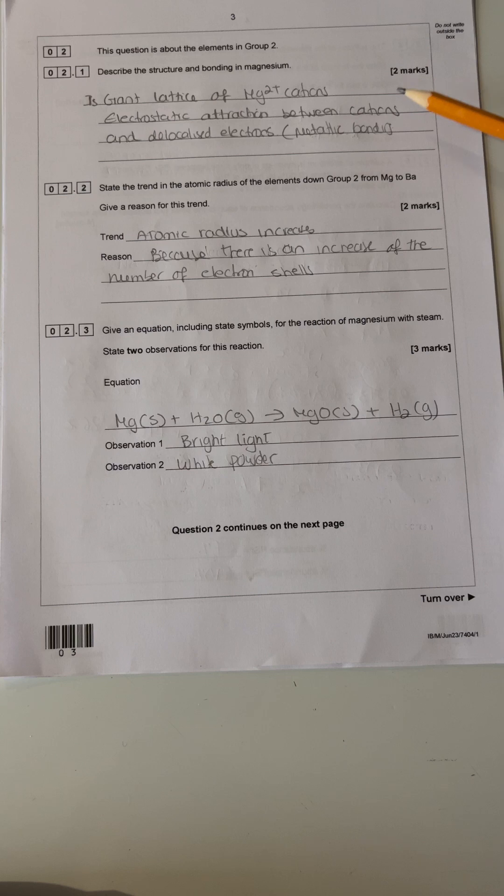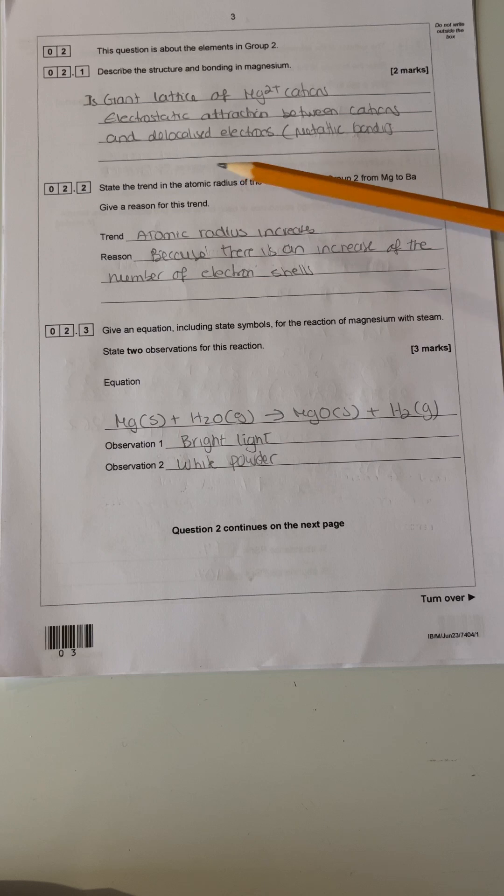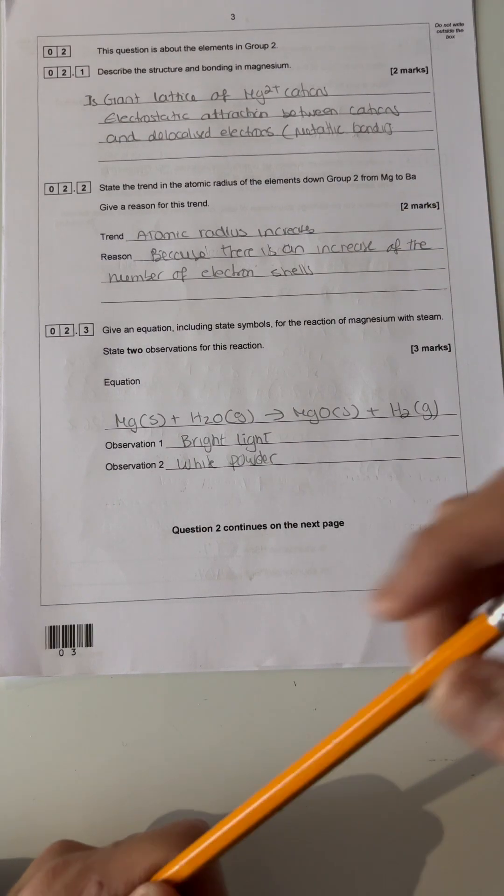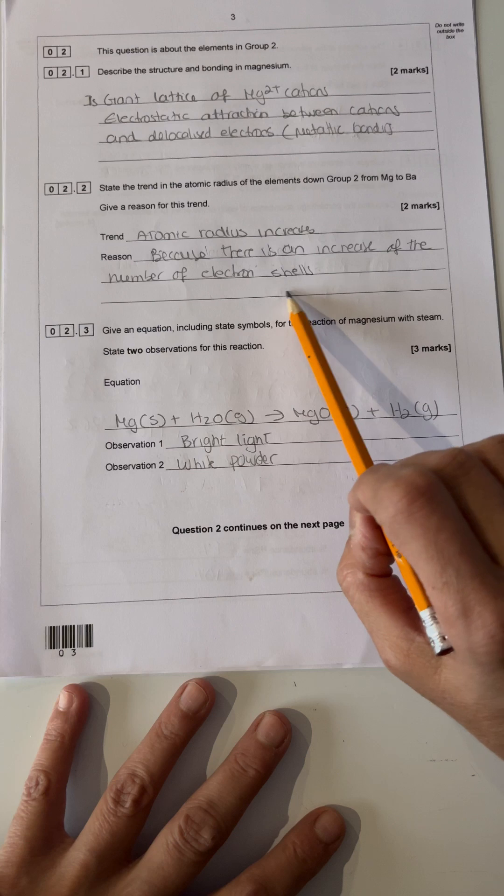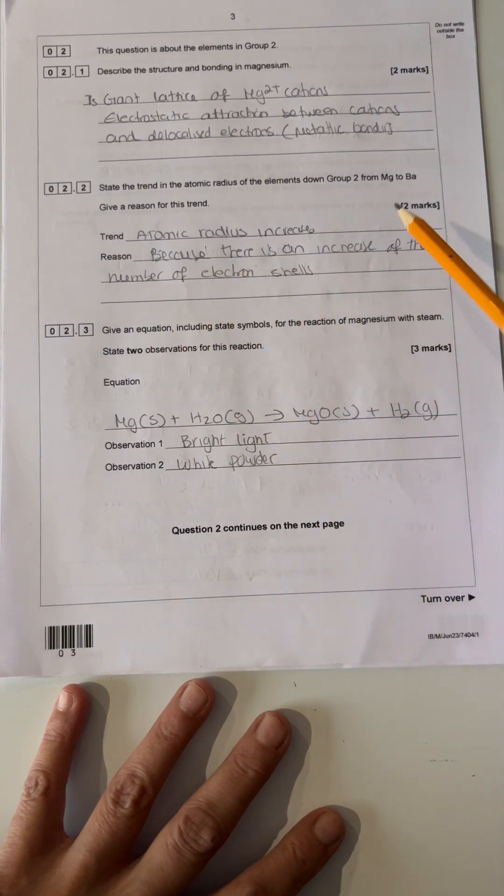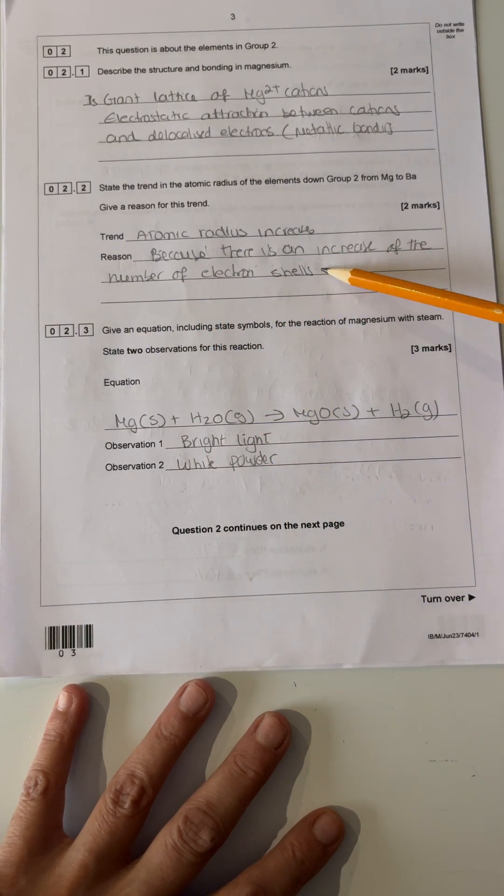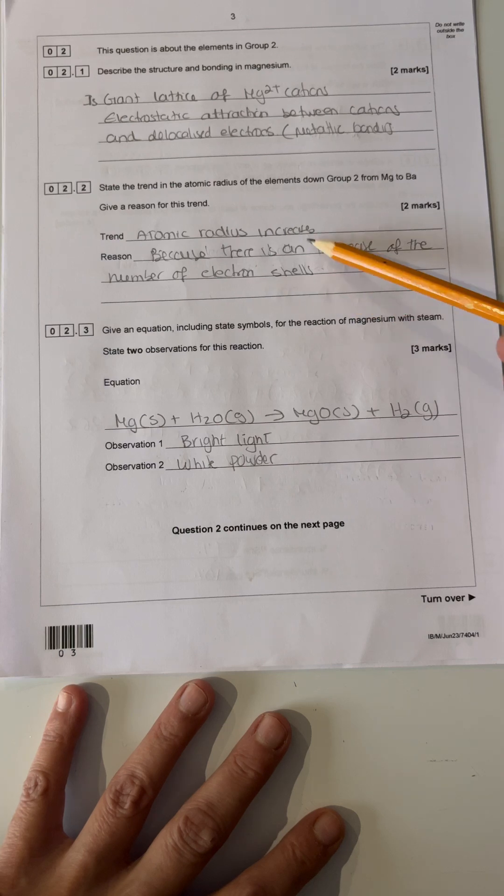State the trend in atomic radius of elements down the group. If you go down the group from magnesium to barium, give a reason for this trend. The atomic radius will increase because as you go down there will be more shells. This question is just two marks, so it's just two things: because there are more shells, there's going to be more shielding from inner electrons. Therefore, there's a weaker attraction between the outer shell electrons and the nucleus.